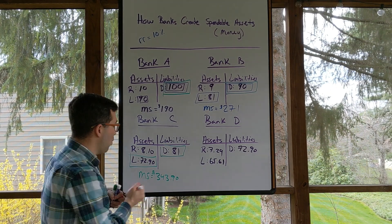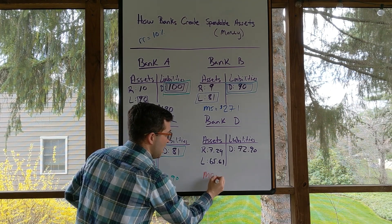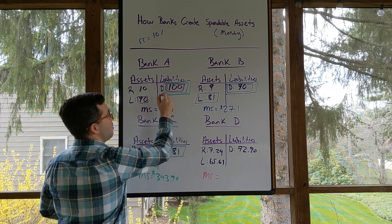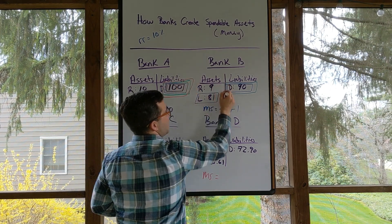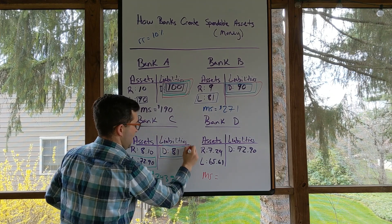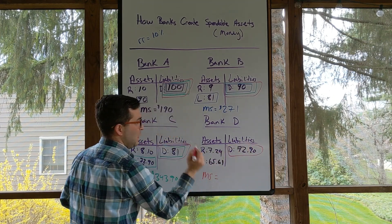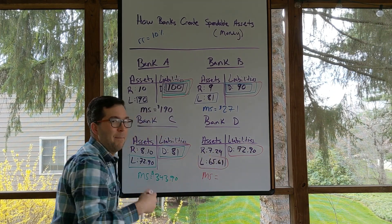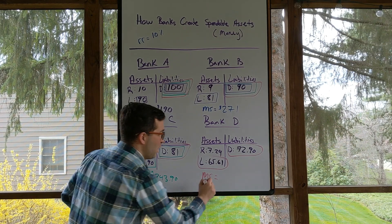So again, one more time, what is that money supply? That money supply is going to be all of the deposits plus that money that's out there. This is $409.51.